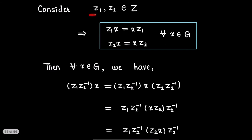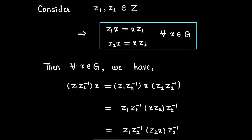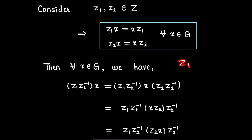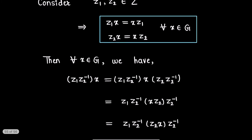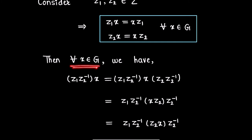Now consider two elements z1 and z2 in the center of group G. Therefore z1 commutes with all elements of G, and similarly z2 commutes with all elements of G. In order to show z1·z2⁻¹ is in the center, we have to show that z1·z2⁻¹ commutes with all elements of group G. So for all x in G, we consider z1·z2⁻¹·x.